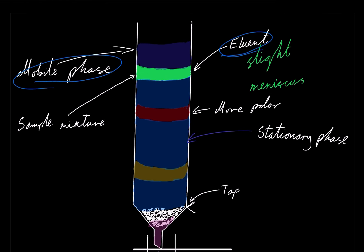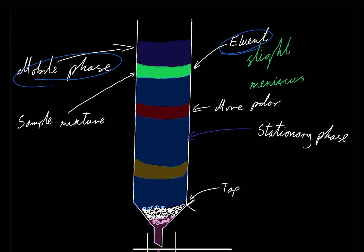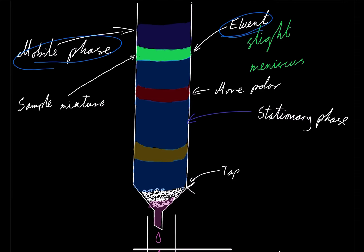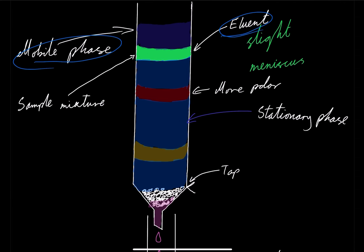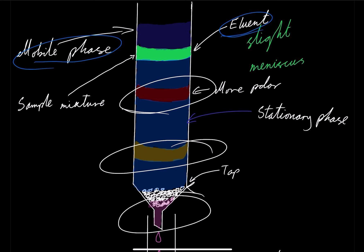Now, here's a practice question based on the diagram. Looking at the mobile phase, sample mixture, and eluent being added — we have three compounds: yellow, pink, and red. I want you to pause the video and tell me: which compound is the least polar, and explain why, ranking them in order.